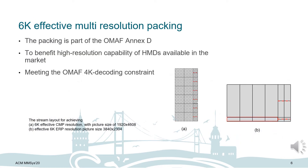The 6K effective multi-resolution packings assessed in this paper are developed by aggregating different parts of the video from different resolution levels. The video is first divided into tiles and encoded with different resolutions. Both packings are OMAF compliant and are intended to limit the overall resolution to be decodable with a single 4K decoder instance at the viewer's device. The content within the viewer's field of view originates from 6K content while the remaining parts are provided at lower resolutions. The stream layouts of both packings are shown in Figure A and B. Figure A is the 6K effective ERP with picture size 1920×4608, while Figure B is the 6K effective CMP.